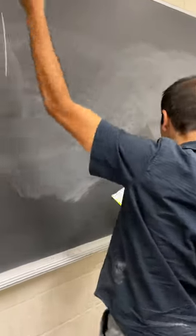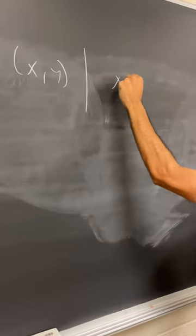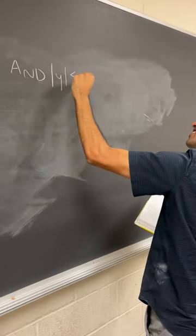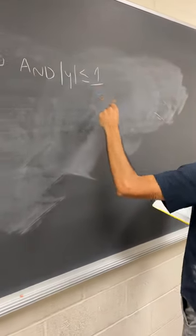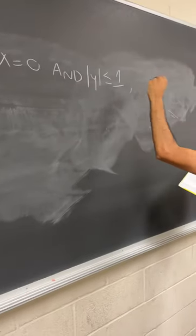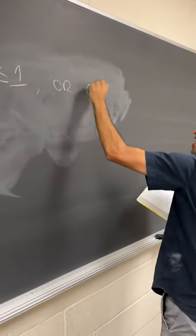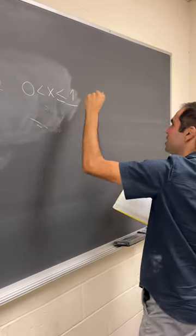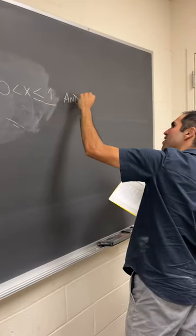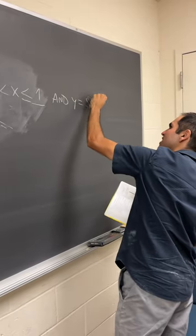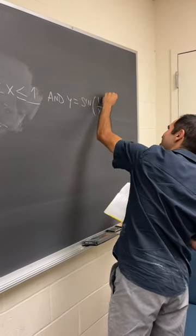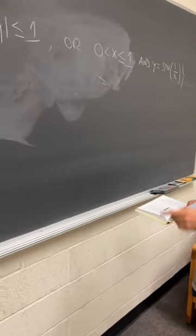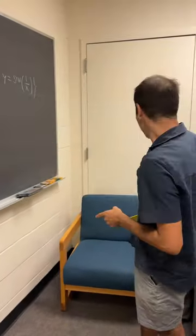That set xy such — so two parts: x equals zero and |y| less than or equal to one, absolute value of y; or x is strictly between zero and one (non-strictly) and y is sine of one over x. Cool — my favorite math book, by the way.